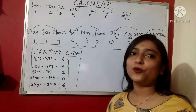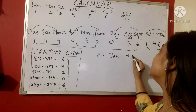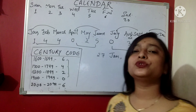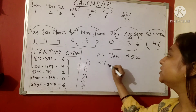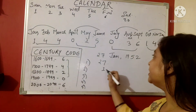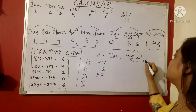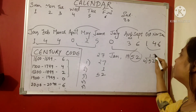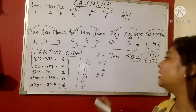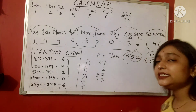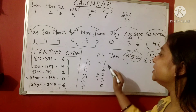Based on these codes, let's solve the first question: which day was it on 27th January 1952? There are five steps. Step 1: write the date — 27. Step 2: the code for January is 1. Step 3: write the last two digits of the year — 52. Step 4: divide 52 by 4 and write only the quotient — that is 13. Step 5: 1952 falls in the 1900–1999 century, so the century code is 0.